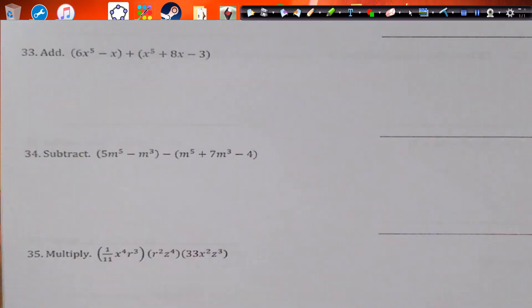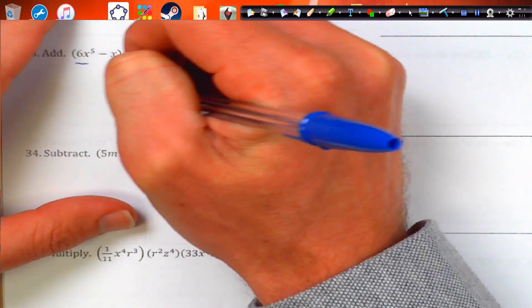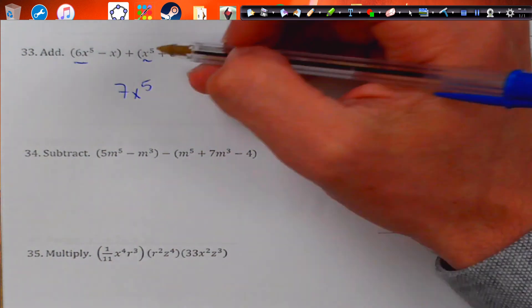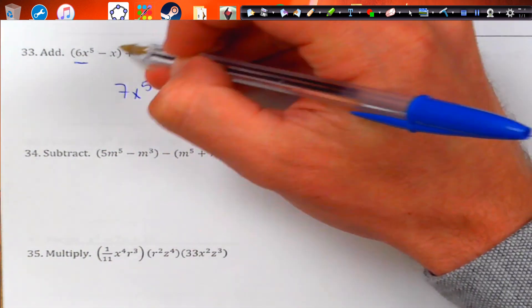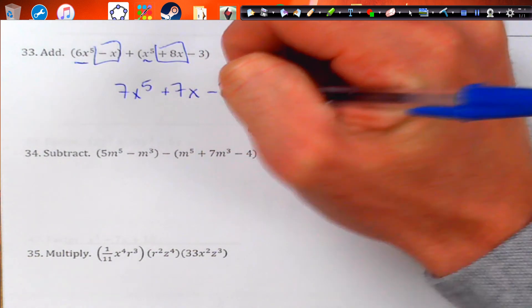We're going to add these. And we get these to combine. So that's going to become 7x to the 5th. Notice that x to the 5th and x to the 5th don't make x to the 10th. And then these guys will combine. We'll get plus 7x, and then we leave with negative 3.